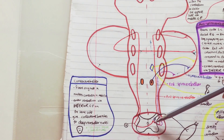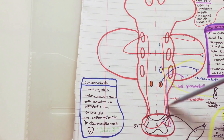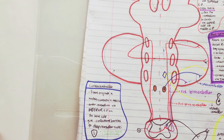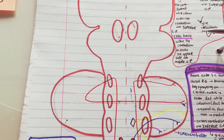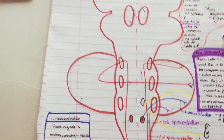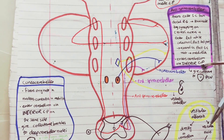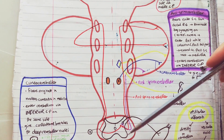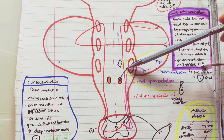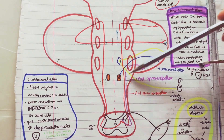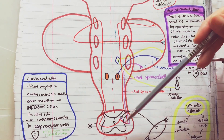The uncrossed anterior spinocerebellar fibers ascend in the lateral white column and enter the cerebellum via the superior cerebellar peduncle. Both anterior spinocerebellar tracts give off collaterals to the dorsal column nucleus. Then we have the posterior spinocerebellar tract — the purple one — which enters the Clarke's nucleus, ascends in the posterior part of the lateral white column, enters the medulla, and then enters the cerebellum via the inferior cerebellar peduncle.